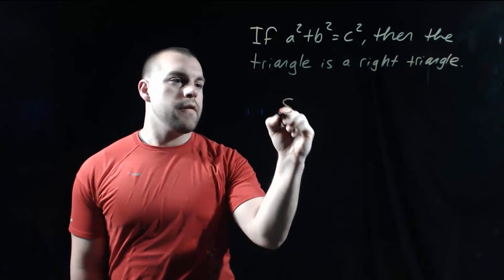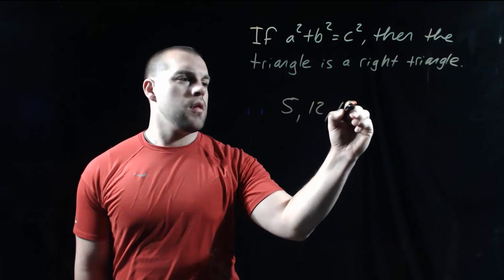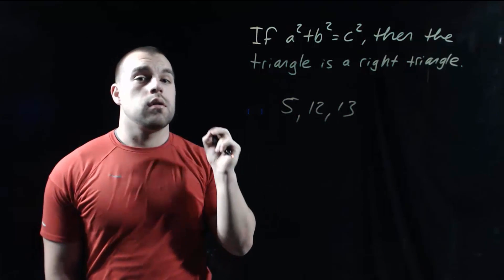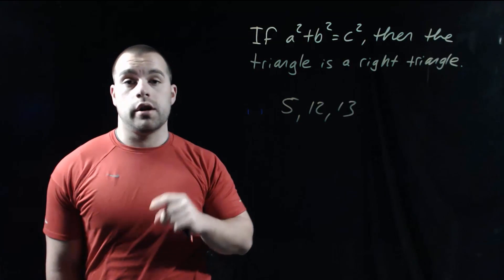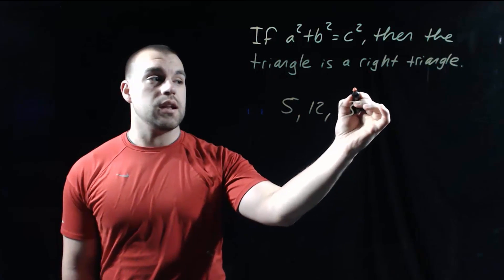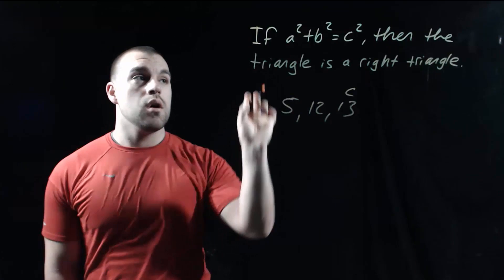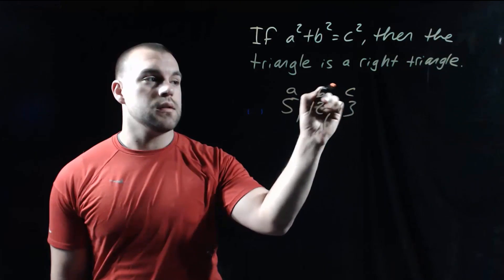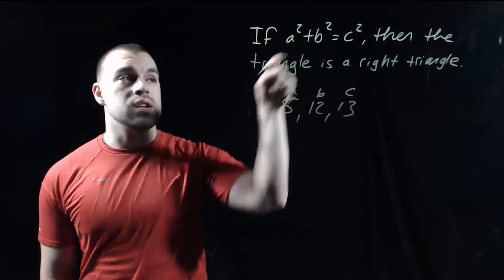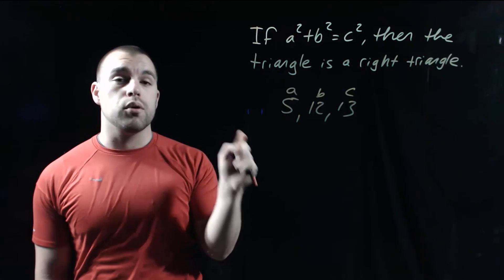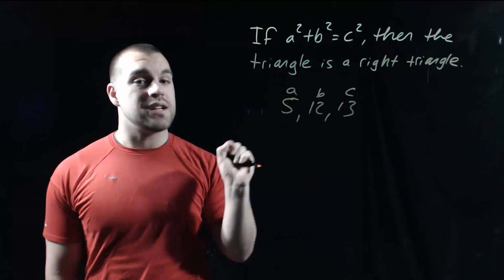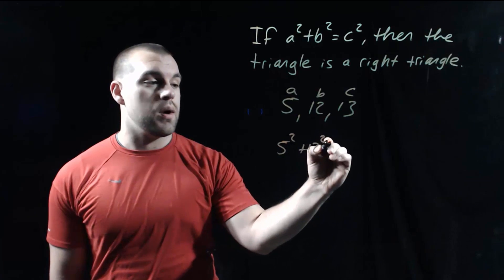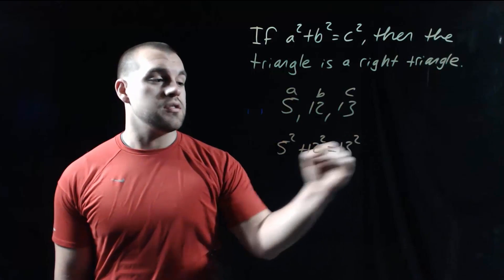Let's use 5, 12, 13 as an example. When we're dealing with a right triangle, the hypotenuse is always the longest side, so this 13 has to be the C value when we're setting up our Pythagorean Theorem. So I'm going to go in order: A, B, C. I'm going to plug those values in to prove that 5, 12, 13 is a right triangle. So if we set it up: 5 squared plus 12 squared equals 13 squared.